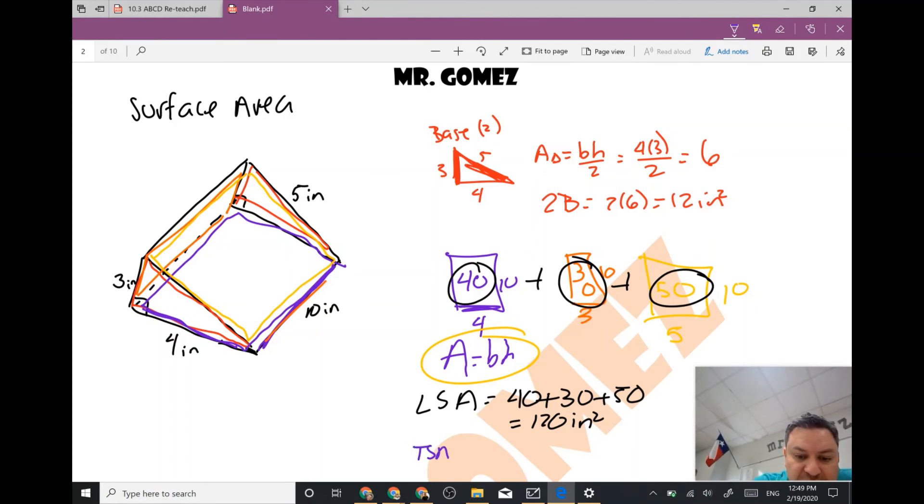Now if I need my total surface area, my total surface area is going to be my lateral surface area plus how many bases, two of them, 2b, which is going to be right here. So this is 120 plus 12, so my total surface area is 132 inches squared.